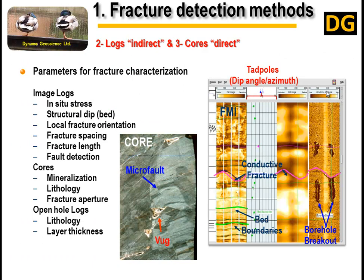Method number two and number three: logs, which is an indirect method, and core, a direct method. As you know, FMI — the Formation Micro Imager — is superior in quantifying fracture density and detecting beds as well, but it has low detectable fracture spacing when imaging. Open hole logs are also of lower resolution than image logs.